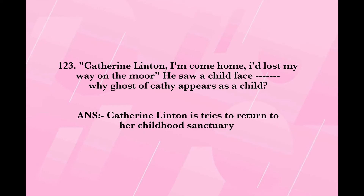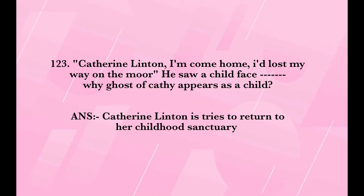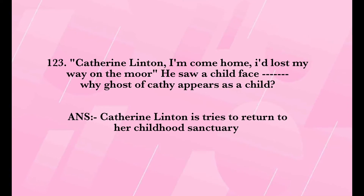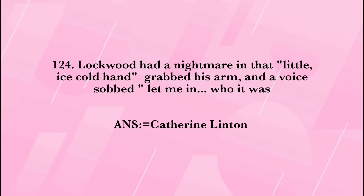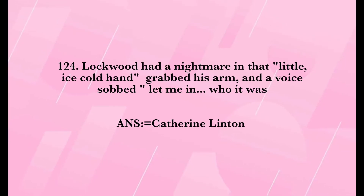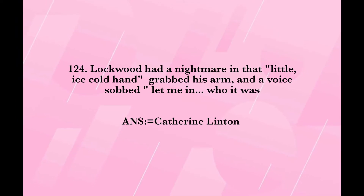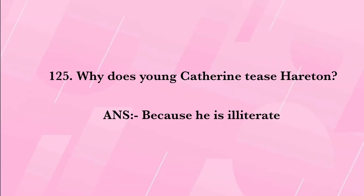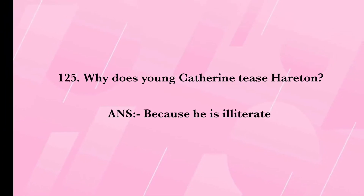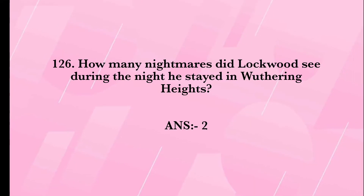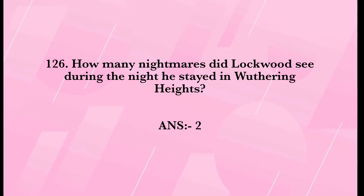'Catherine Linton, I am come home. I have lost my way on the moor.' He saw a child's face. Why does the ghost of Cathy appear as a child? Answer: Catherine Linton tries to return to her childhood sanctuary. Lockwood had a nightmare in which an ice-cold hand grabbed his arm and a voice sobbed, 'Let me in.' Who was it? Answer: Catherine Linton. Why does young Catherine tease Hareton? Answer: Because he is illiterate. How many nightmares did Lockwood see during the night he stayed at Wuthering Heights? Answer: Two.